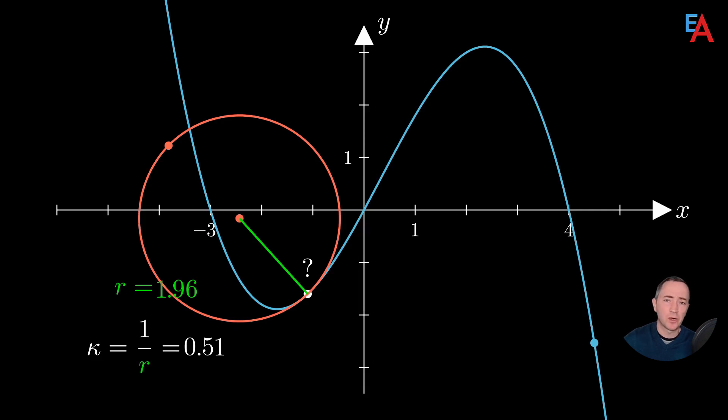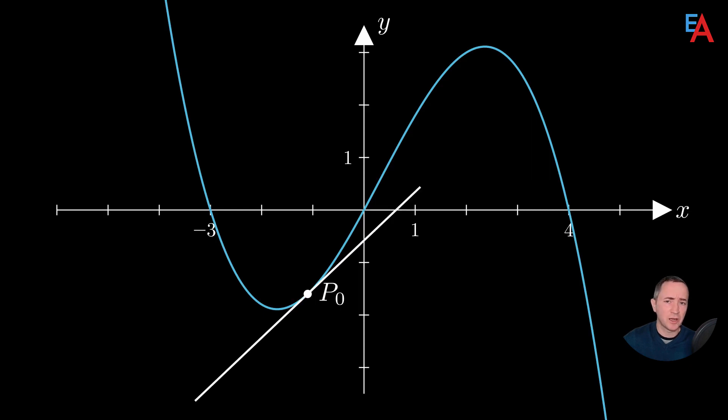In particular, let's first see how to determine the center of a curvature circle. Let's choose a certain point P0 on our polynomial where we want to measure the local curvature. At this point, we can draw a tangent line and a line perpendicular to it, which we call the normal line. Only the second straight line will be useful to us.